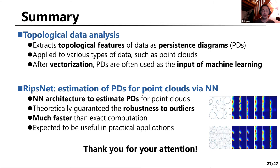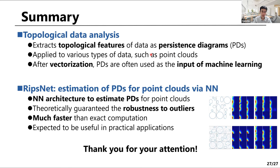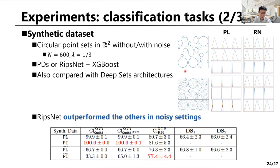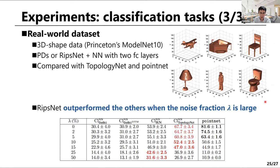Question from the audience: What are the highest dimensions of the dataset and degrees of homology that you have run this on? In the synthetic experiment, we used 2D point clouds and only zeroth and first persistent homology. For the ModelNet10 experiment, we used 3D point sets and up to second persistent homology.